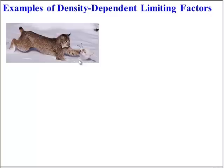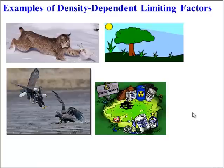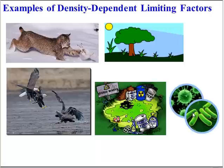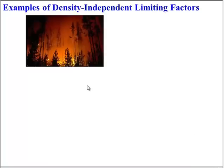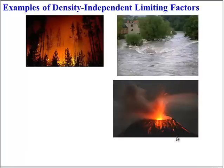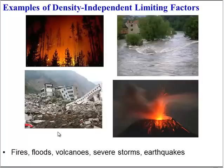Density-dependent examples include predation, disease, and competition for resources — all of these have a more dramatic impact when the population gets more crowded. That makes a lot of sense for competition: if you don't have many individuals, there's not much competition, but when you're really crowded, competition increases. Density-independent limiting factors tend to be abiotic and include things like fires, floods, volcanic eruptions, earthquakes, and other natural disasters — all of which have the same impact whether the population is crowded or not.